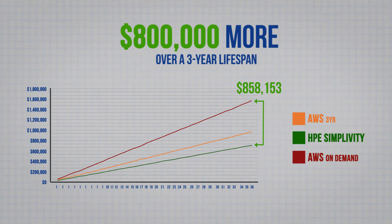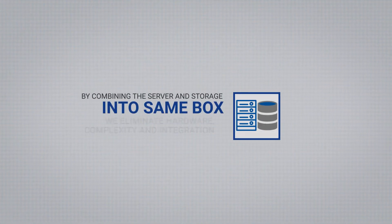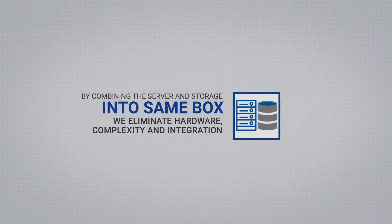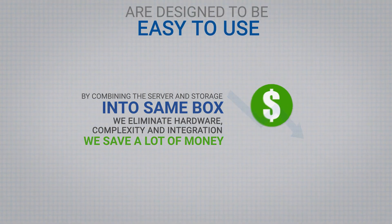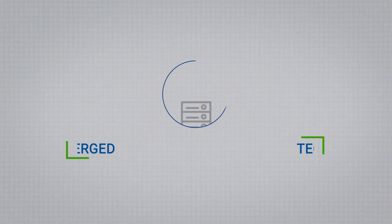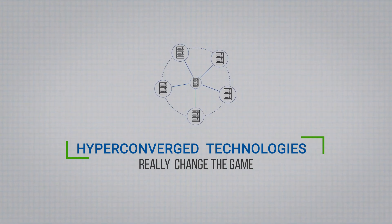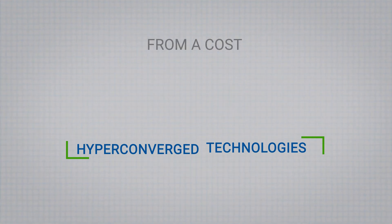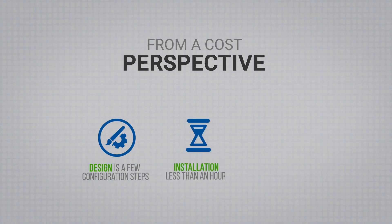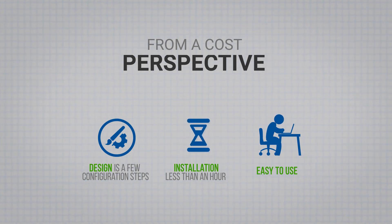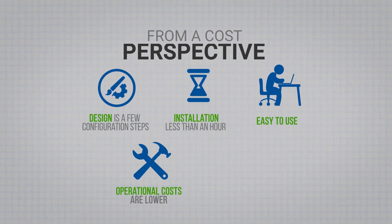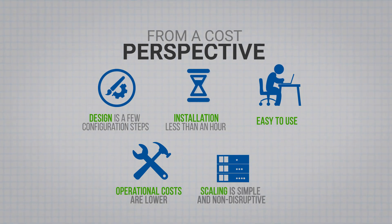So why is the hyperconverged solution lower? With HCI, you're buying less gear than with traditional infrastructure. By combining the server and storage function into the same box, we eliminate hardware, we eliminate complexity and integration, and we save a lot of money. On the OPEX side, HCIs are designed to be easy to use all the way around. Hyperconverged technologies really change the game from a cost perspective — specifically, the design process is just a few configuration steps, installation takes less than an hour, they're easy to use, reducing management tasks to the VM level. Operational costs are lower, and scaling is simple and non-disruptive — you just add nodes.